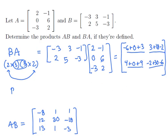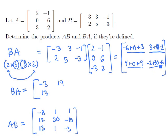If we clean this up, BA equals the matrix with first entry negative 3, second entry 3 plus 18 minus 2, which is 19. Then 4 plus 9 is 13, and the last entry is 30 minus 8, which is 22. As a final observation, note that it's almost never the case that AB and BA match — they don't commute.